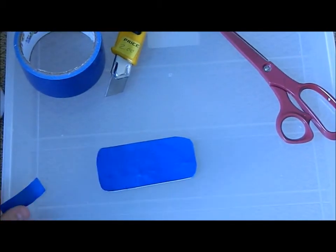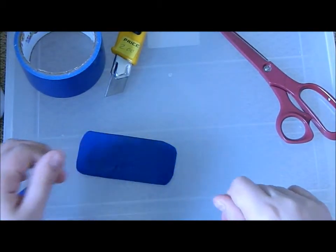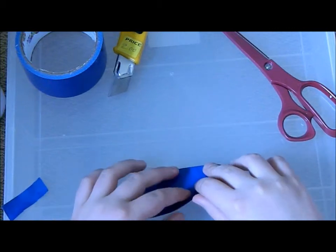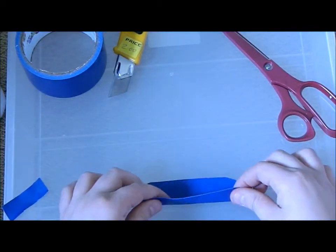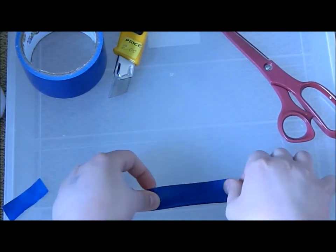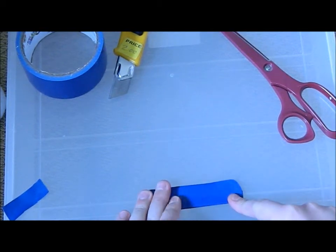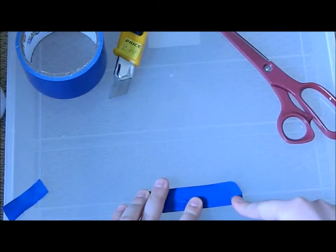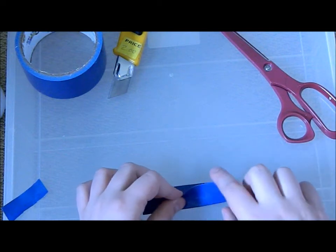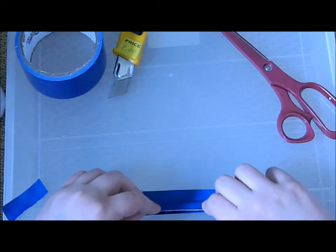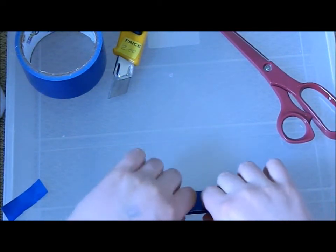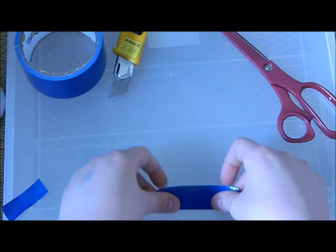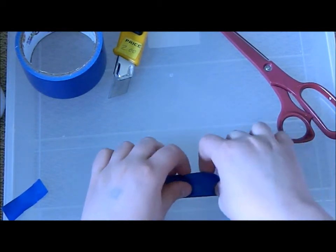Okay, so now what you do is you fold this in half. It doesn't have to be exact or nothing, but relatively in half. And you're going to fold these edges down, one on this side, then one on this side.